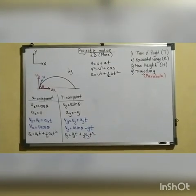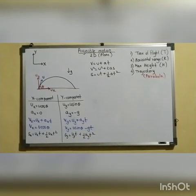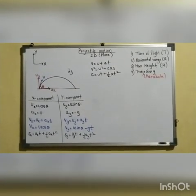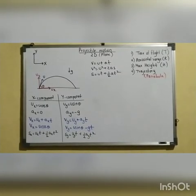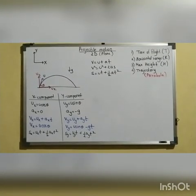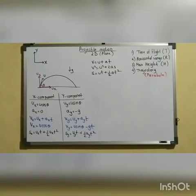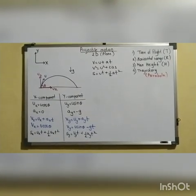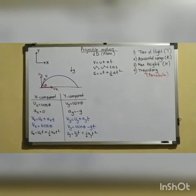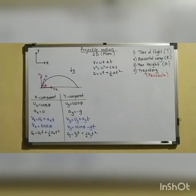For projectile motion, we need to derive equations for four factors: time of flight, horizontal range, maximum height, and the trajectory. First, let's start with time of flight — the time for which the projectile is in air, that is, the time required by the body to travel from the initial position to the final position.